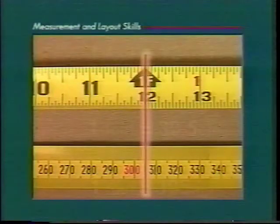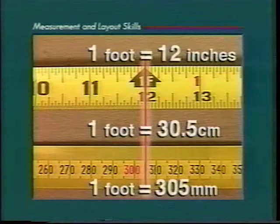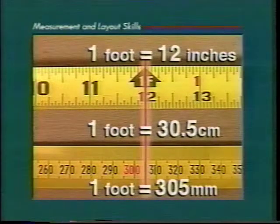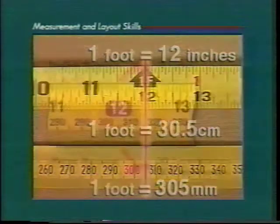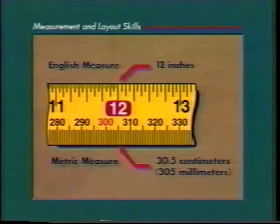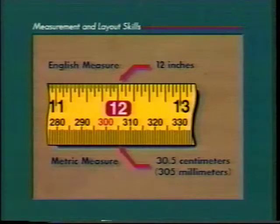See the difference in measuring one foot or 12 inches and the corresponding metric number of 30.5 centimeters or 305 millimeters. Some tapes show both systems of measure — these are called dual tape measures.